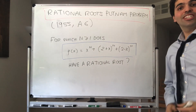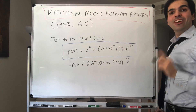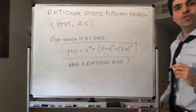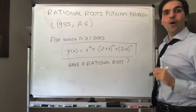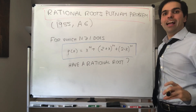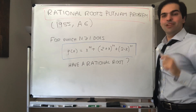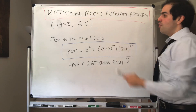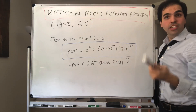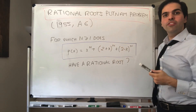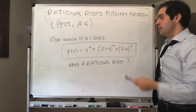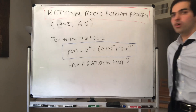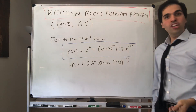All right, thanks for watching. Today I want to cover a very neat rational roots Putnam problem, which Black Pen Red Pen recommended to me. The question is: for which integer n greater or equal to 1 does the following polynomial have a rational root?